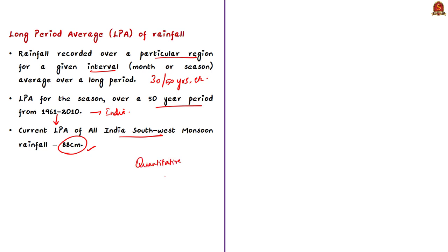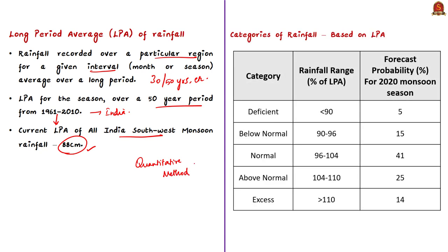Based on Long Period Average, rainfall distribution is categorized into five different categories: deficient, below normal, normal, above normal, and excess. For example, if rainfall range is about 96 to 104% of LPA, it is categorized as normal. Based on this categorization, the experimental forecast of IMD in June 2020 suggested a high probability of 41% for the 2020 monsoon season rainfall to be more than 104% of LPA, indicating above-normal to excess rainfall.